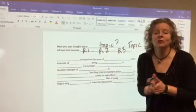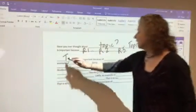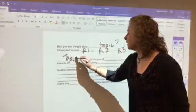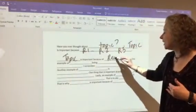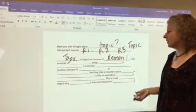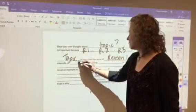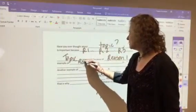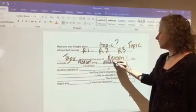Now this is the format you're going to follow for every single paragraph after this. You're going to name your topic. Topic is important because of reason one, and then we have to prove it. So this is where you give your evidence. You give one example of your reason as your first piece of evidence.